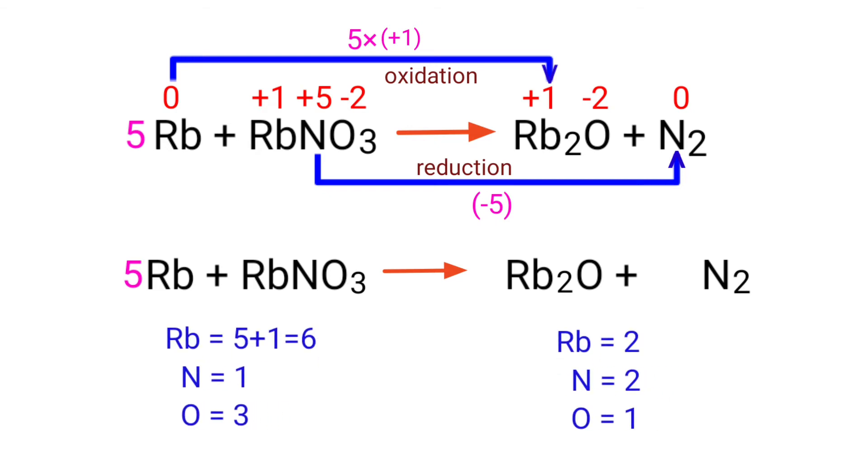On the reactants side there are 6 rubidium atoms, 1 nitrogen atom, and 3 oxygen atoms. On the products side there are 2 rubidium atoms, 2 nitrogen atoms, and 1 oxygen atom. The number of atoms are not balanced on both sides.